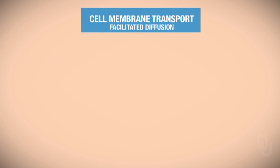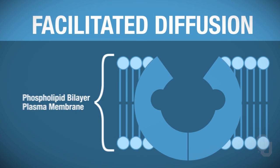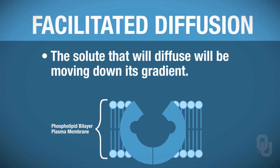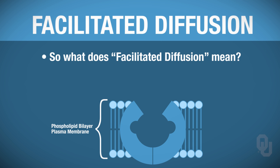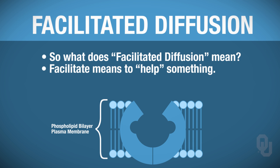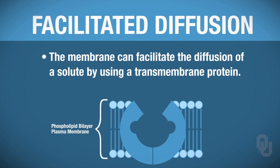With facilitated diffusion, since this is a passive movement, the solute that's going to diffuse is going to be moving down its gradient — along the gradient and down the gradient mean the same thing. It's facilitated, however. To facilitate means you help it, and so in facilitated diffusion the membrane can help a solute diffuse by using a transmembrane protein.